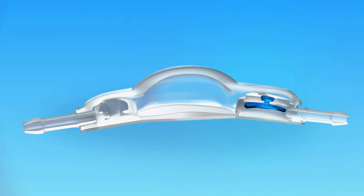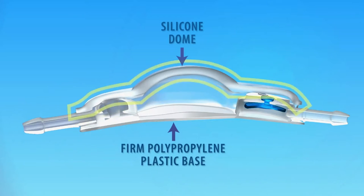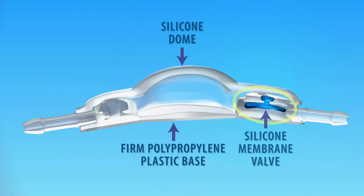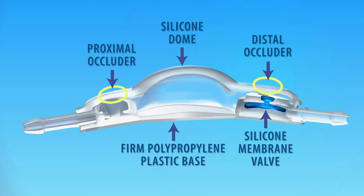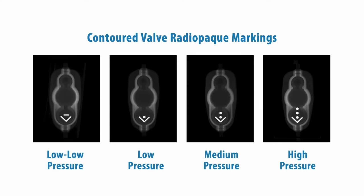The Medtronic contoured valve consists of a polypropylene base, a silicone dome, and a silicone membrane valve. The contoured valve also has proximal and distal occluders for selective flushing. Additionally, the contoured valve has radiopaque markings.